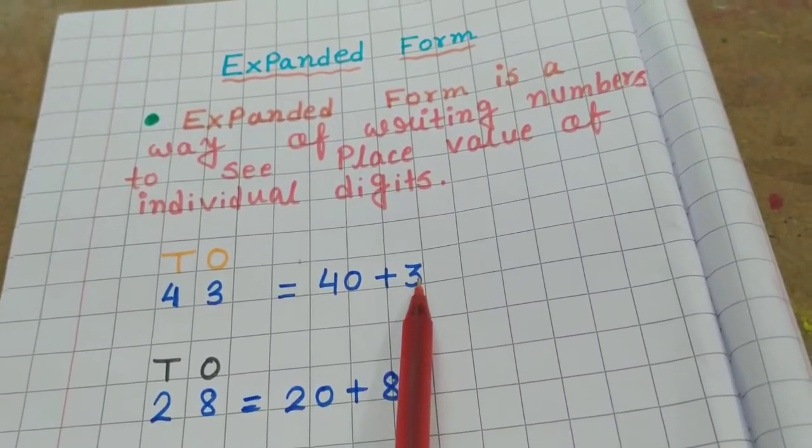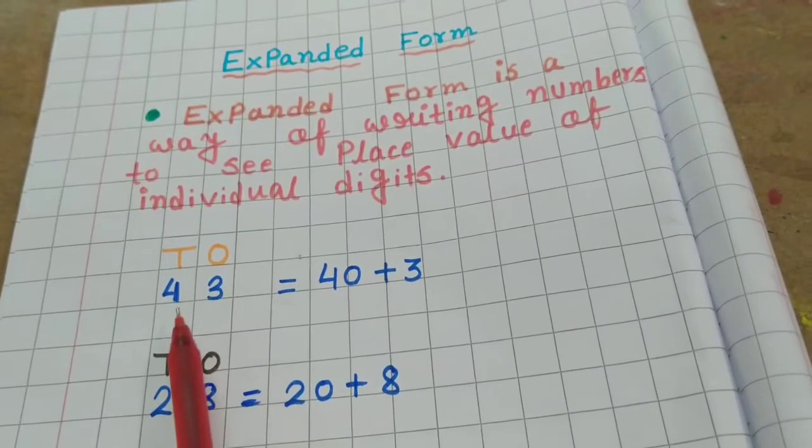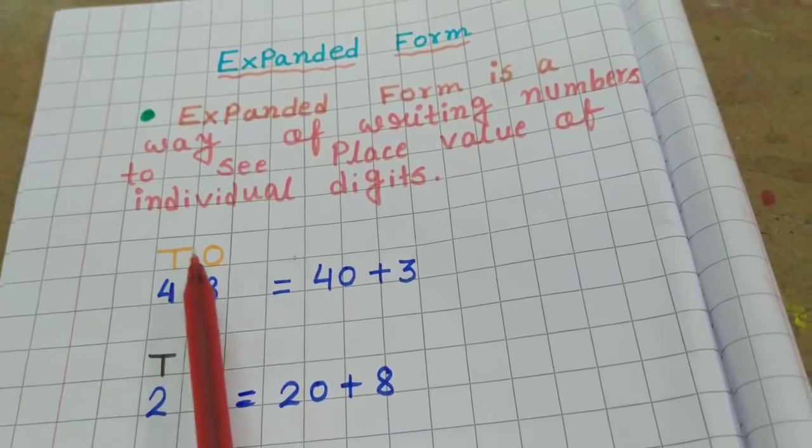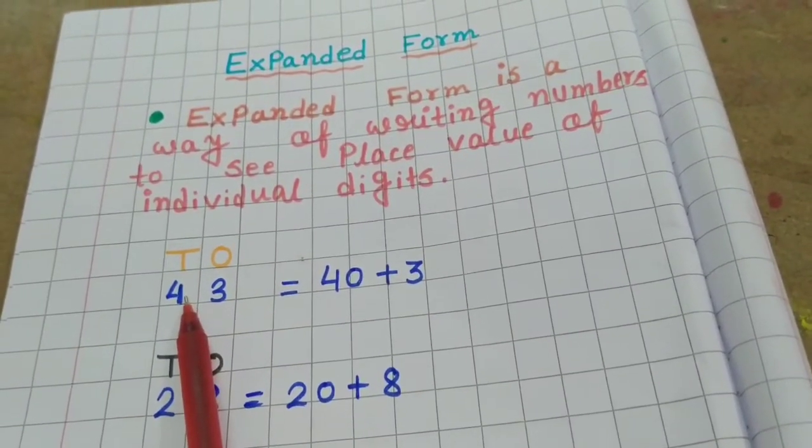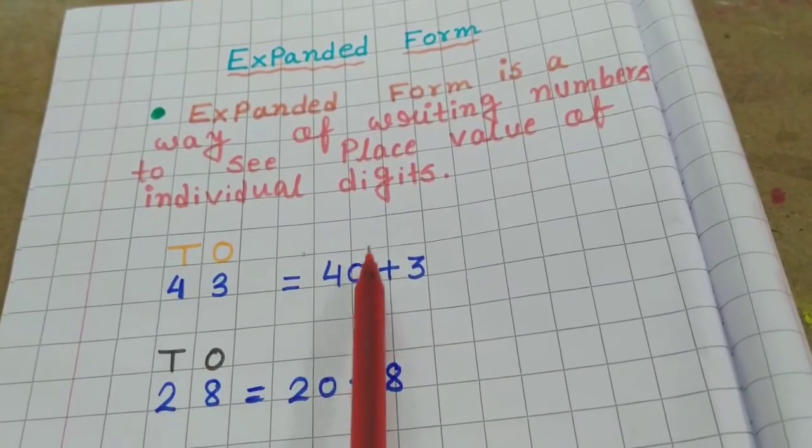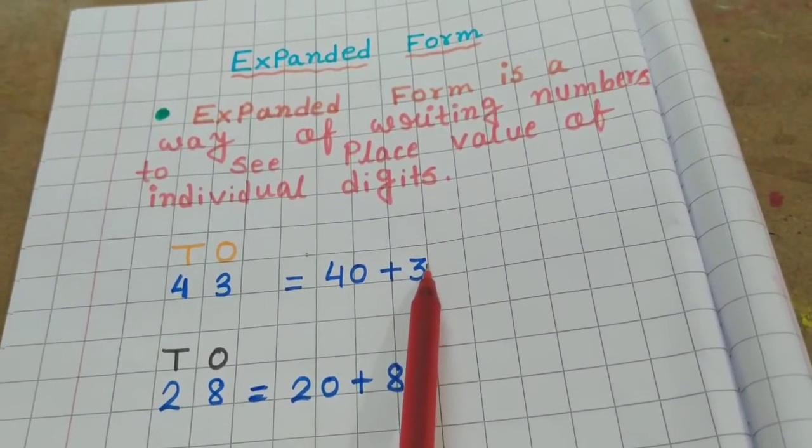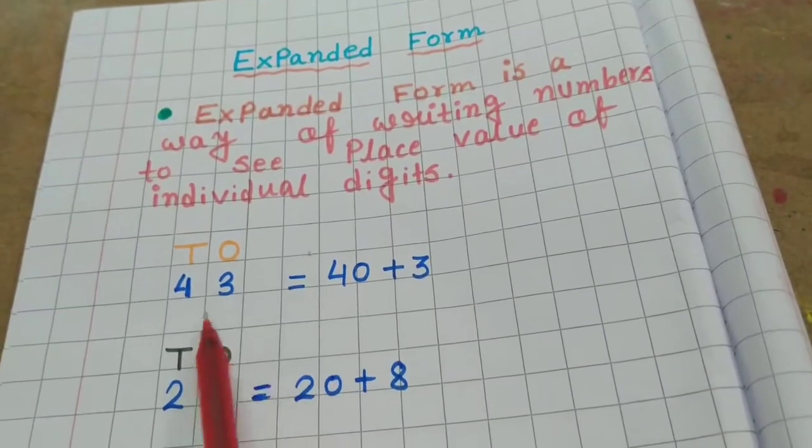3 is in 1s place and 4 is in 10s place. So, 4 tens means 40 plus 3 is equal to 43.